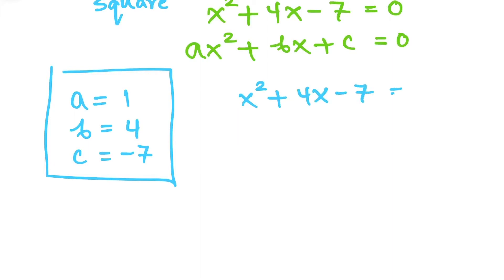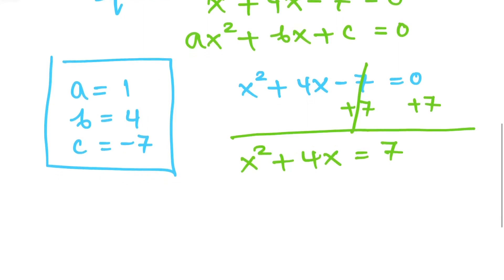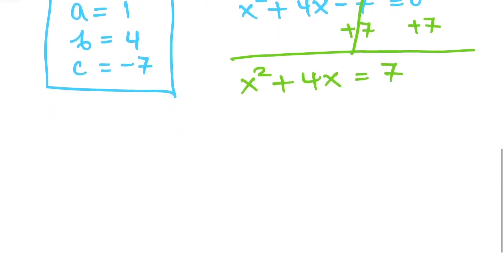Let's try solving this. We have x² + 4x - 7 = 0. The first thing you want to do is move c to the other side. To get rid of that -7, add 7 to both sides. These two cancel each other out, so we have x² + 4x = 7.